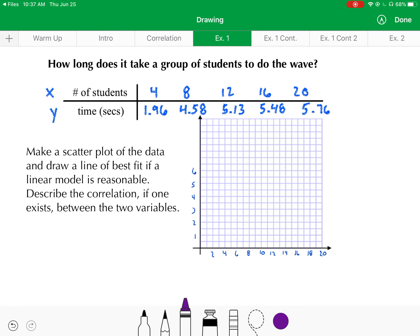You can see I already have my coordinate plane labeled here, and let's go ahead and plot everything. First point is 4, 1.96, where 4 represents the number of students, 1.96 represents the time it took for those four students to do the wave. If we plot that right around there. Oh, I'm sorry, that's 0.96 right here is 1.96. Next, going up to right about here, it's 8, 4.58, then we have 12, 5.13, 16, 5.48, and then 20, 5.76.